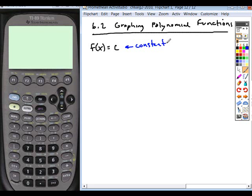Okay, in this particular case, what is the graph going to look like? Any ideas? So let's say the c value was 3. f of x equals 3. What's that graph going to be? What's it going to look like?